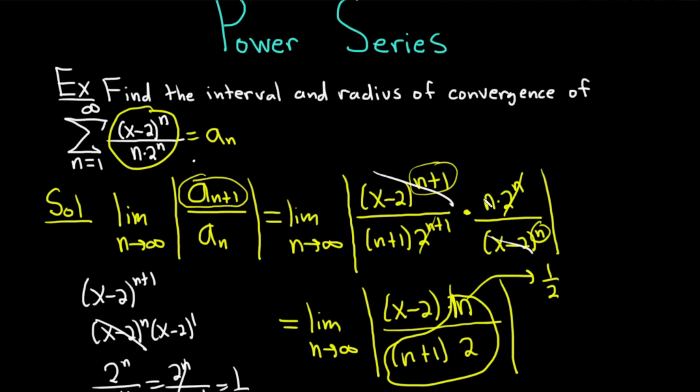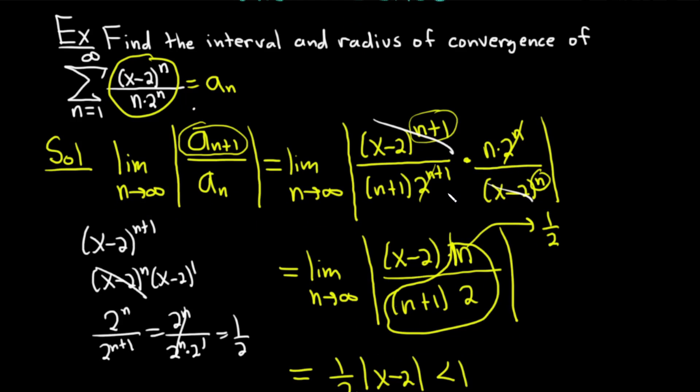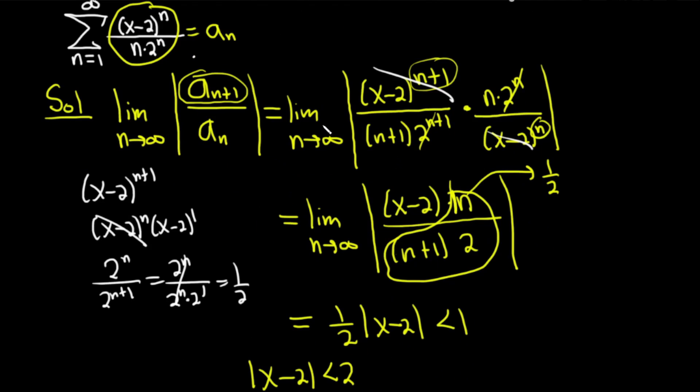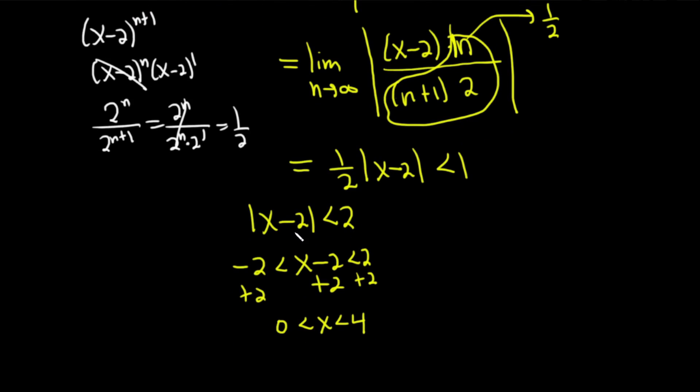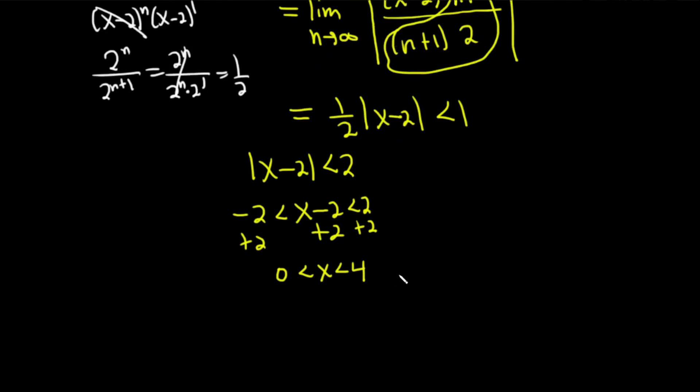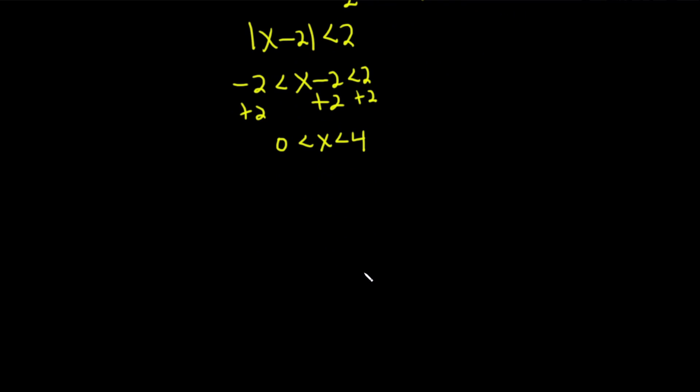The simplification tricks are going to be the same in pretty much every problem. Most are like this. Then you simplify, drop the absolute value, you get a plus and a minus, and you're here. So now what you want to do is check the endpoints.